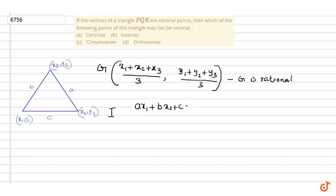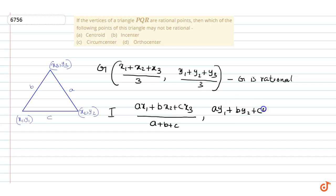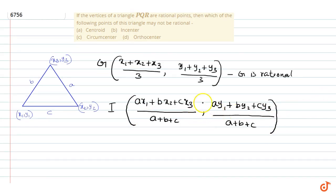The incenter I is given by (a·x1 + b·x2 + c·x3) divided by (a + b + c), and (a·y1 + b·y2 + c·y3) divided by (a + b + c). This may not be rational, because the side lengths a, b, and c may not be rational. Therefore, the incenter may not be rational.